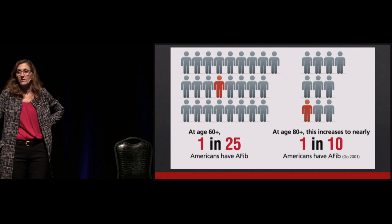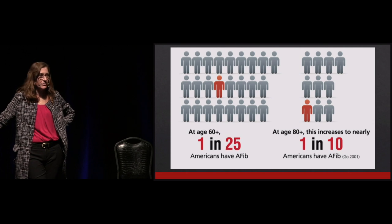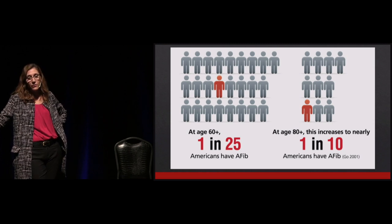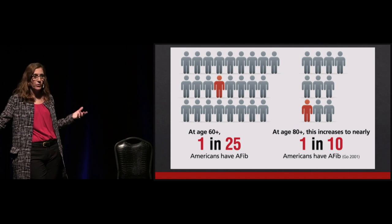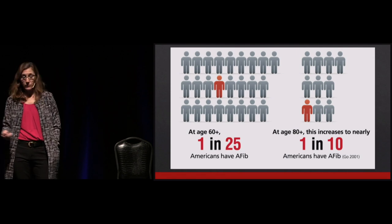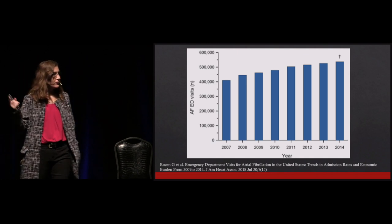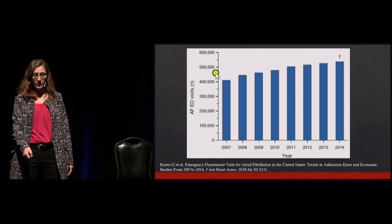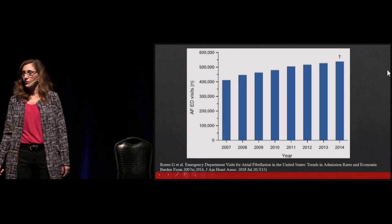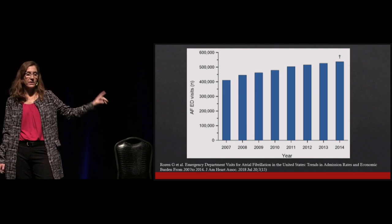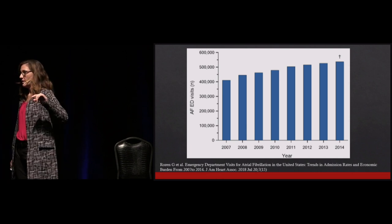AFib is a disease of aging. Very few patients under 60 have AFib — only about 2% of AFib is found in patients under 60. But by age 80, 10% of the population has atrial fibrillation. There are about 33.5 million people in the world with AFib, approximately 6 million right here in the United States. They come to the emergency department — the incidence of ED presentations for AFib keeps going up, with a 31% increase over eight years in ED visits for AFib-related complaints.